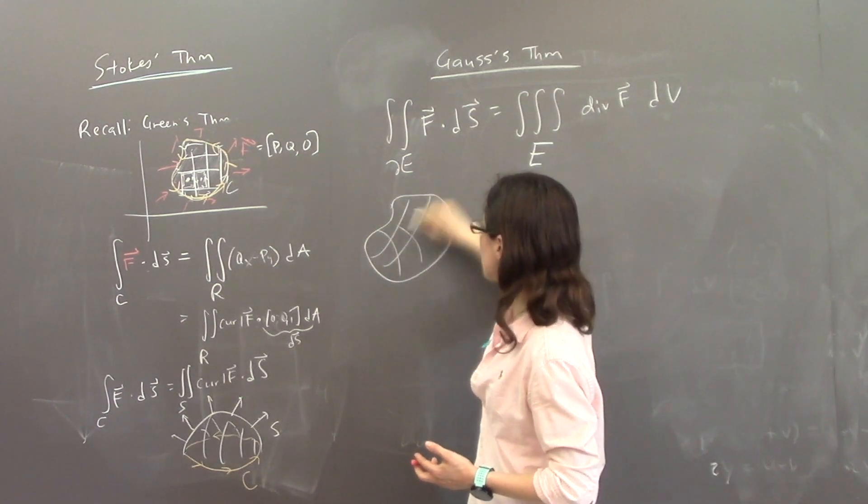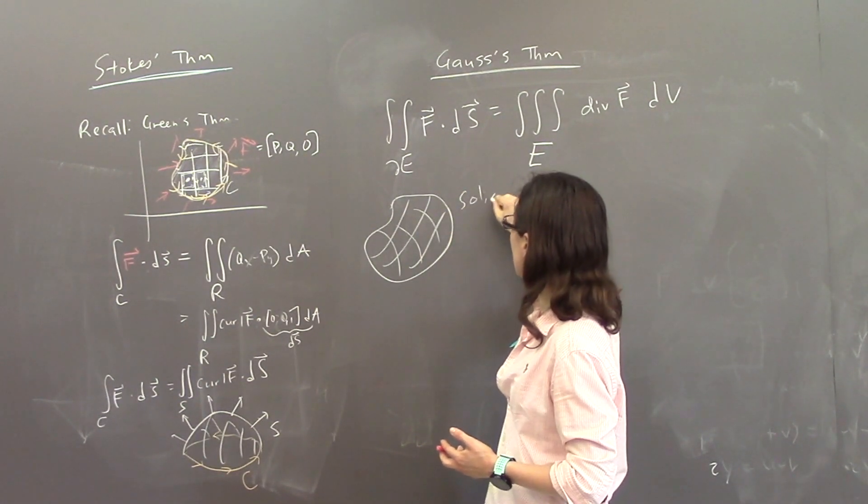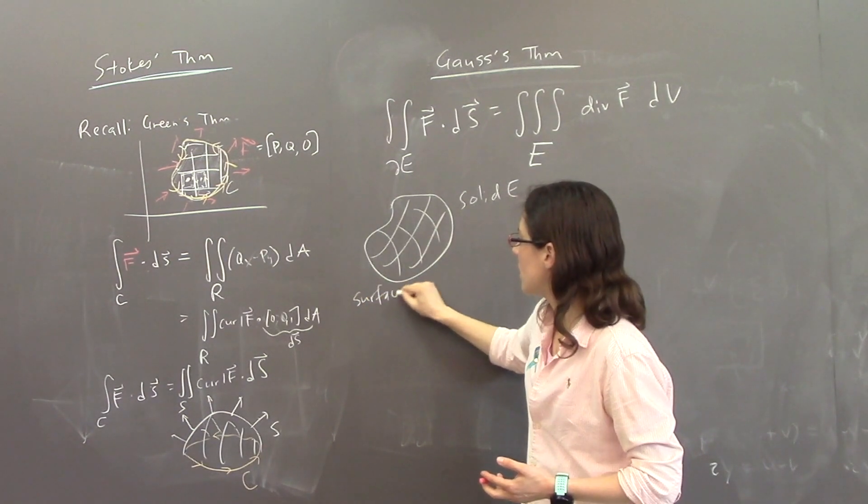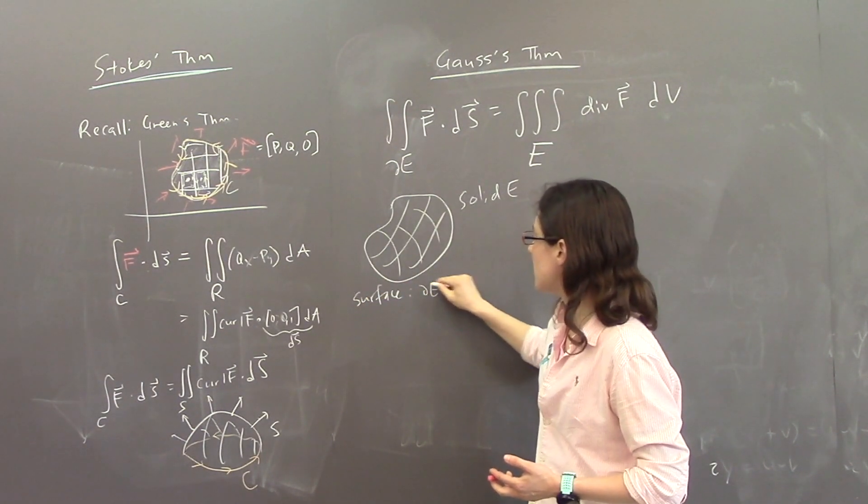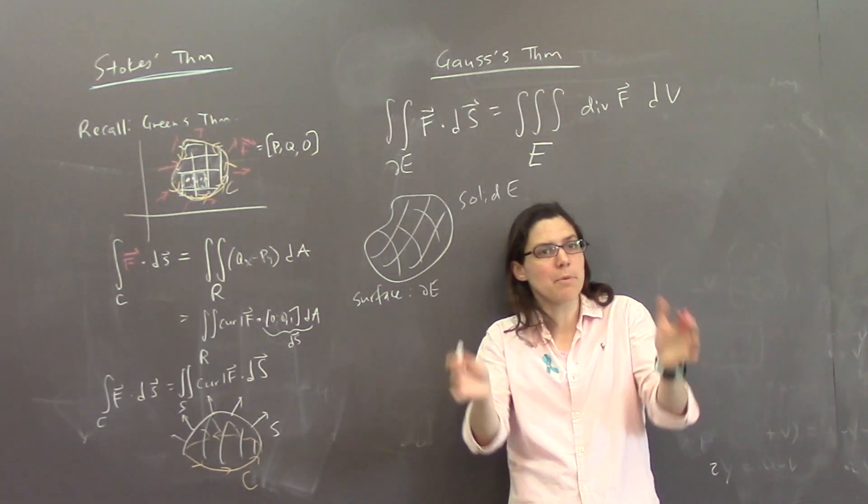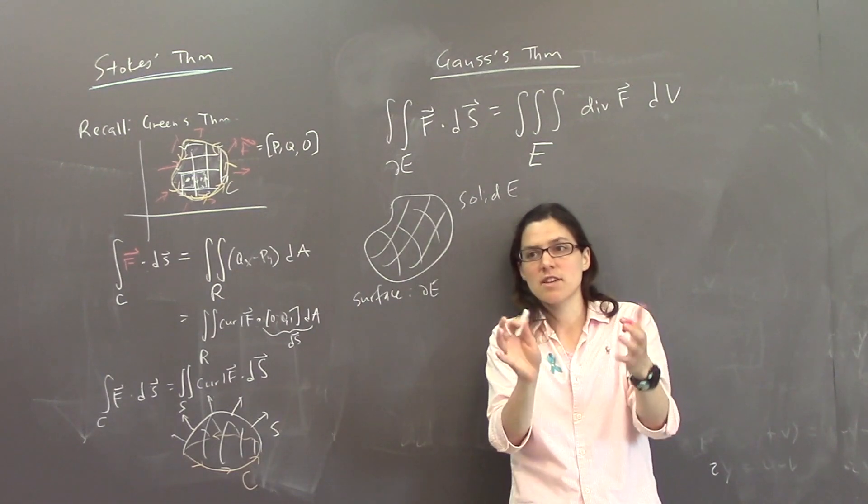So I'm telling you that this is E. So this is a solid thing E, and the surface is the boundary of E. So E is a solid, and boundary of E is, like, all the parts of E that you can touch is the surface.